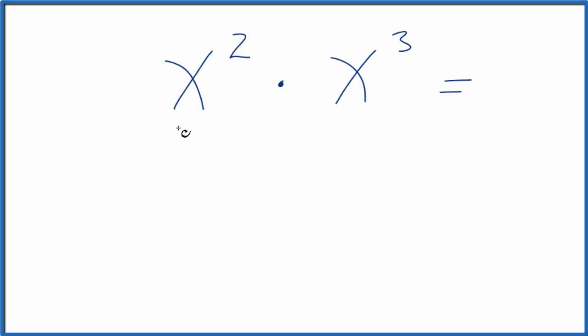Let's take a look at how we can multiply x squared times x cubed. So we'll do this two ways.